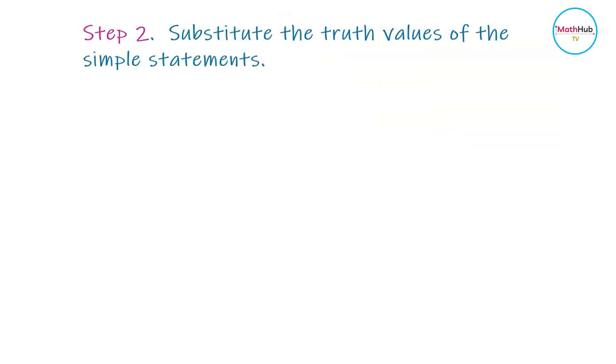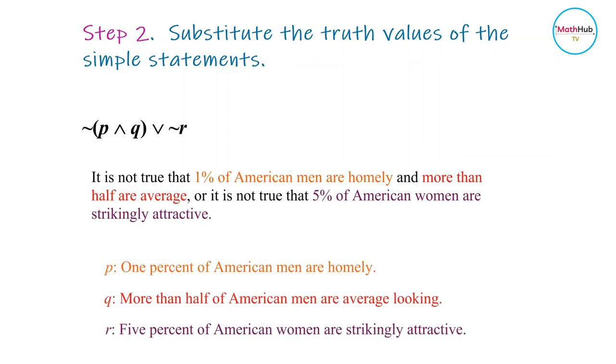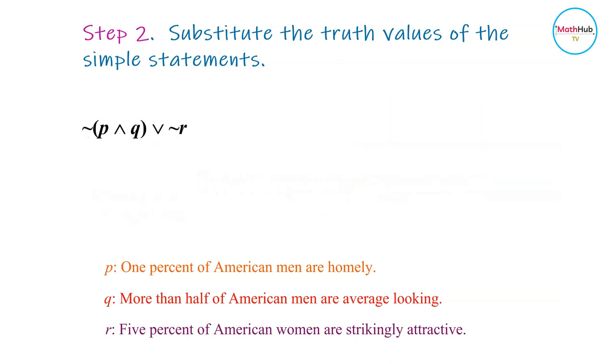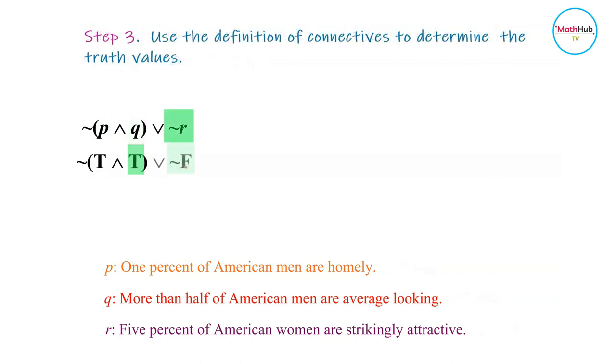To answer, we substitute the truth values for P, Q, and R that we obtained from the bar graph. The compound statement in symbolic form is not P and Q or not R. We substitute the truth values obtained from the graph: P is true, Q is true, R is false, giving us not true and true or not false.